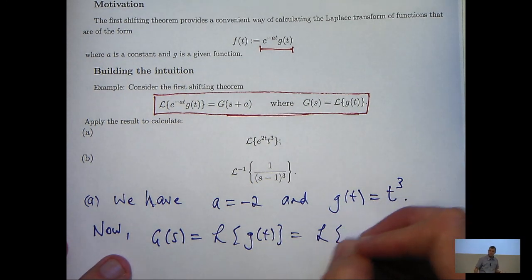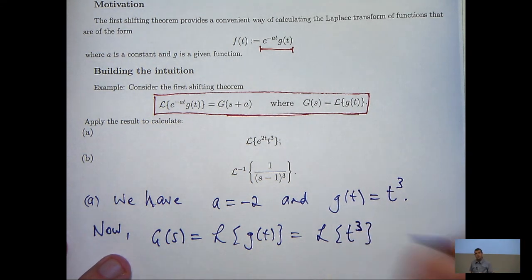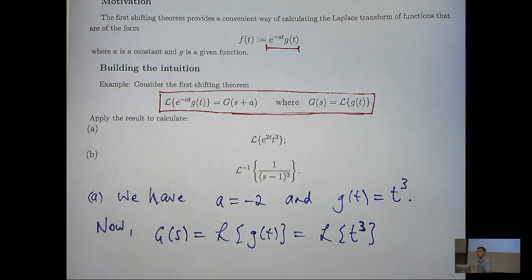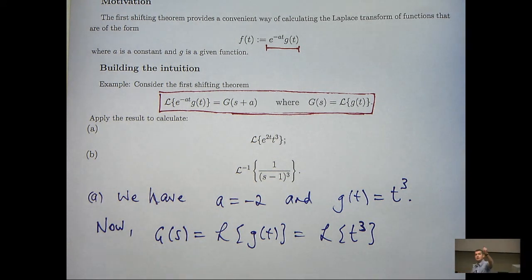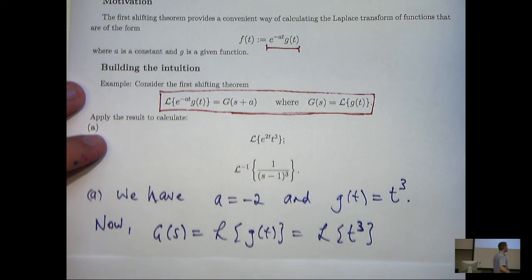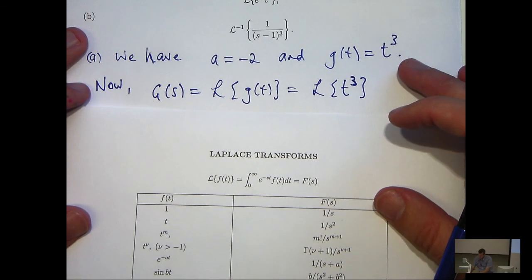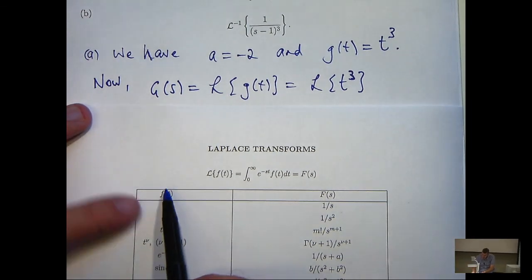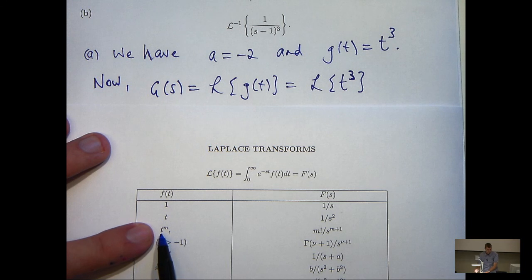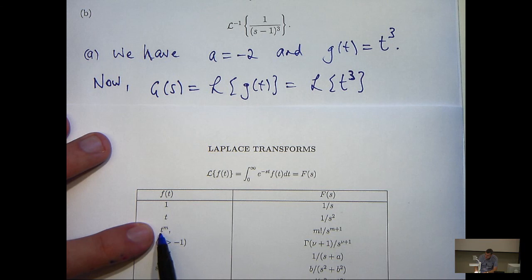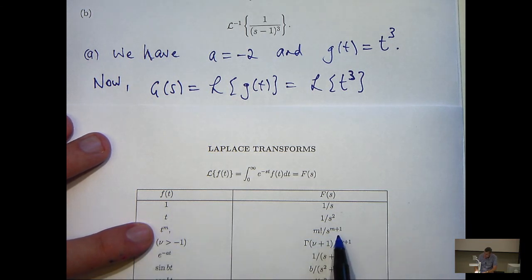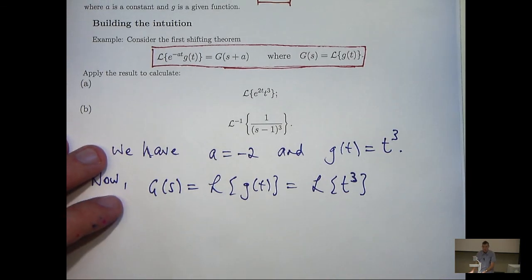What we're going to do is calculate this first by finding the Laplace transform of t cubed, and then shift that to get our final answer. To calculate the Laplace transform of t cubed, I'm going to use a table, as that is standard practice with Laplace transforms. If we look at the third line of the table with m equals 3, the Laplace transform of t cubed is 3 factorial over s to the power 4.